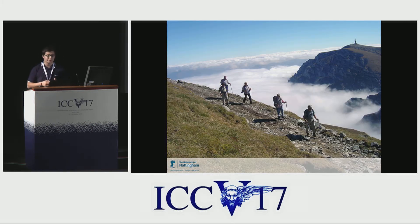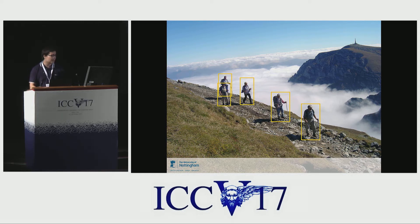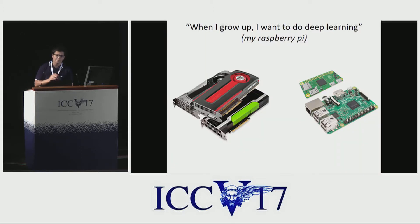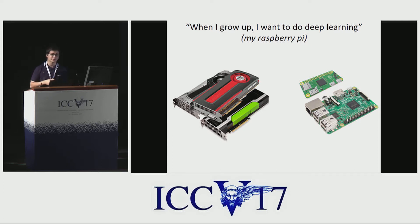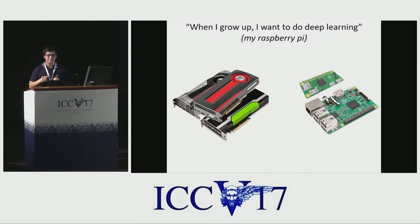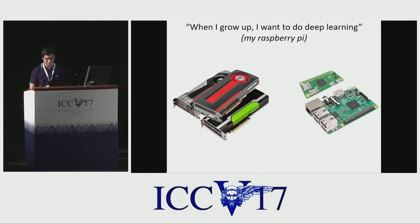Recently, CNNs have achieved remarkable performance on a wide variety of tasks, such as image recognition, object detection, human pose estimation, or face alignment. While such approaches offer unprecedented results, in order to achieve real-time or close-to-real-time performance, one or more high-end GPUs are usually required. This is especially problematic when such methods need to run on devices with limited computational resources, such as smartphones or small single board embedded devices like a Raspberry Pi.